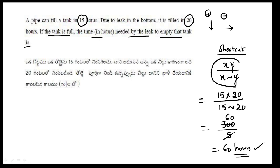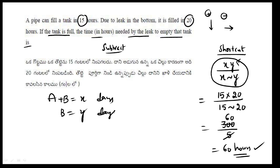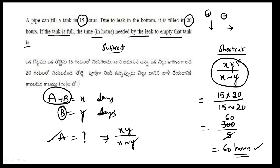If the pipe fills and there is a leak emptying it, the total time formula remains xy divided by (x minus y). This same formula applies to all similar problems — whether it is filling or emptying. All problems of this type use the same formula.